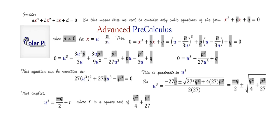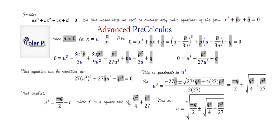Then u is the cube root of this expression — that's just taking the cube root on both sides, being mindful that r is ± the square root of the discriminant.